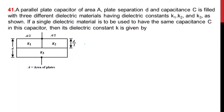Hello everyone. A parallel plate capacitor of area A, plate separation D, and capacitance C is filled with three different dielectric materials having dielectric constants K1, K2, and K3 as shown in the figure. If a single dielectric material is to be used to have the same capacitance C, then its dielectric constant K is given by?